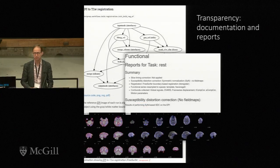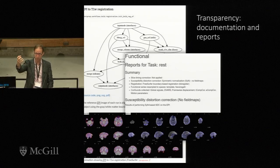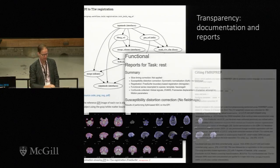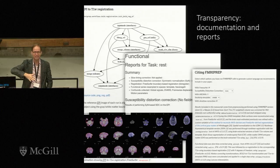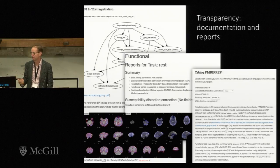The documentation walks through how EPI to T1-weighted registration works, shows the Nipype workflow, and provides details about what's actually being done to the data. You get reports back for each individual scan saying, for instance, we did this distortion correction — here's how it worked, you can look at the images and visualize how it should have worked. Finally, we provide boilerplate text: here's how you should report what you've done. This allows people to report results in a way that's compliant with standards like COBIDAS, providing a sufficient amount of detail.